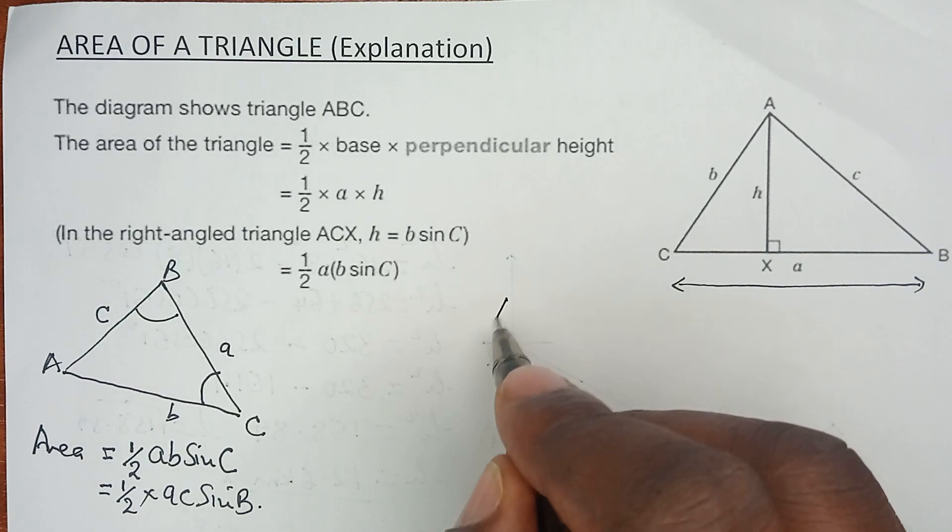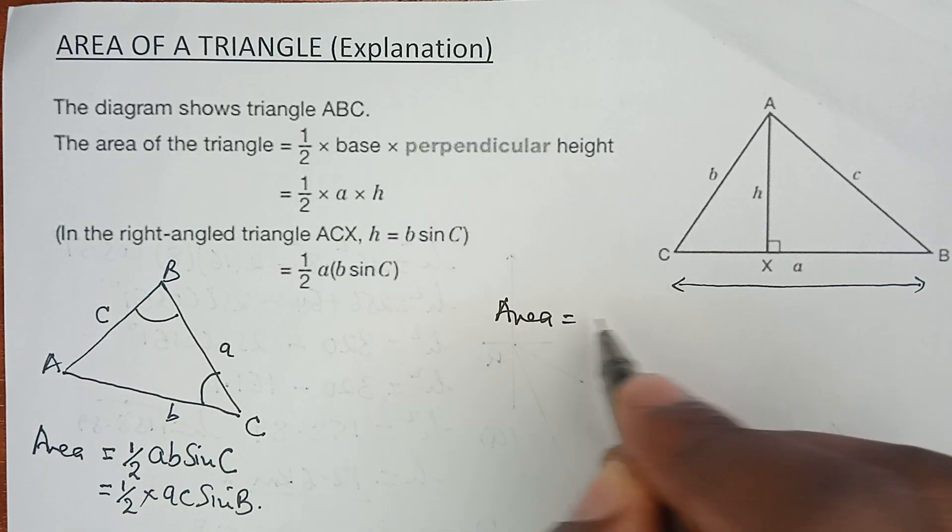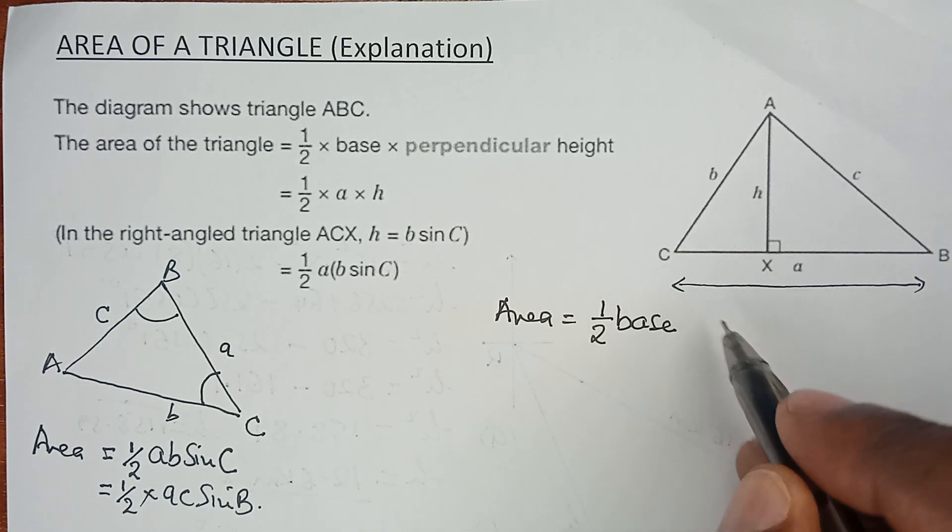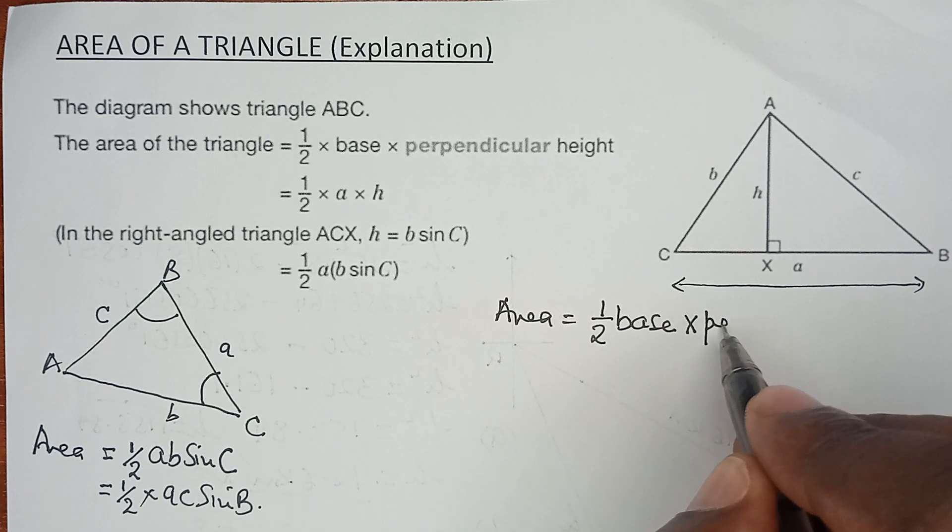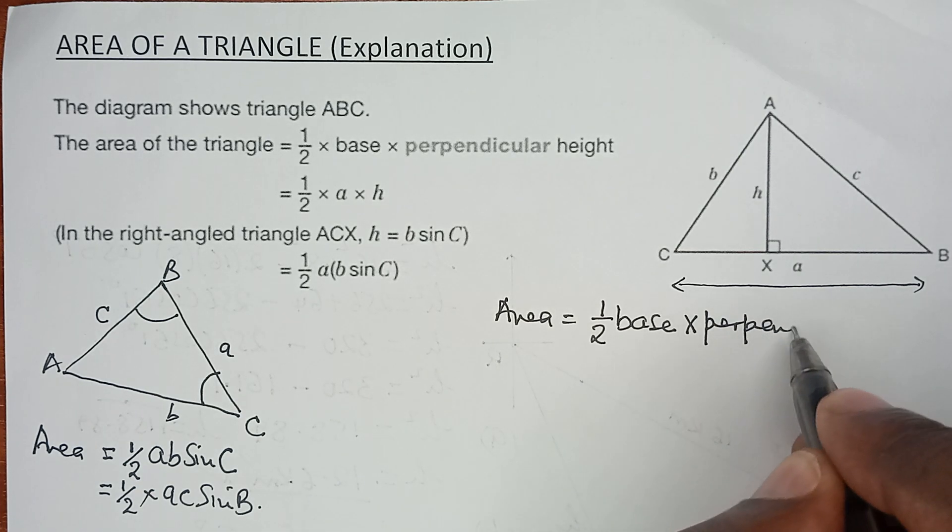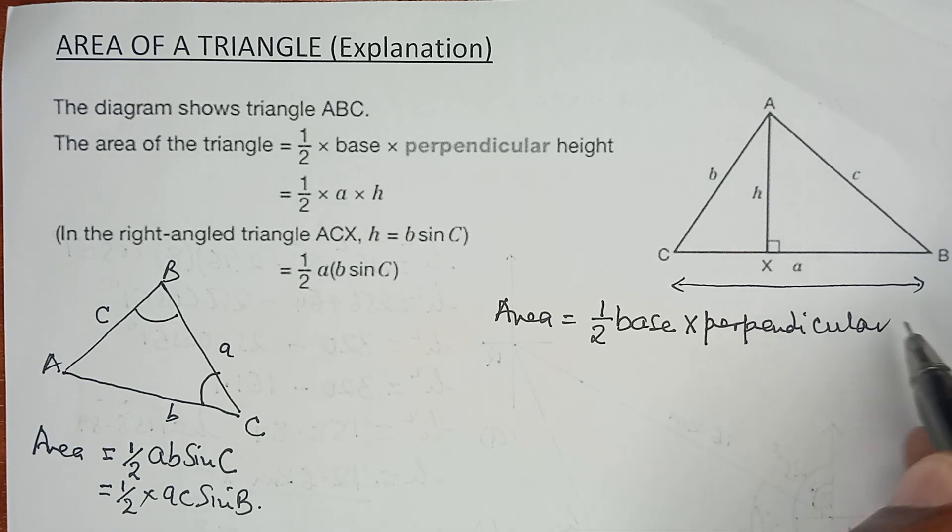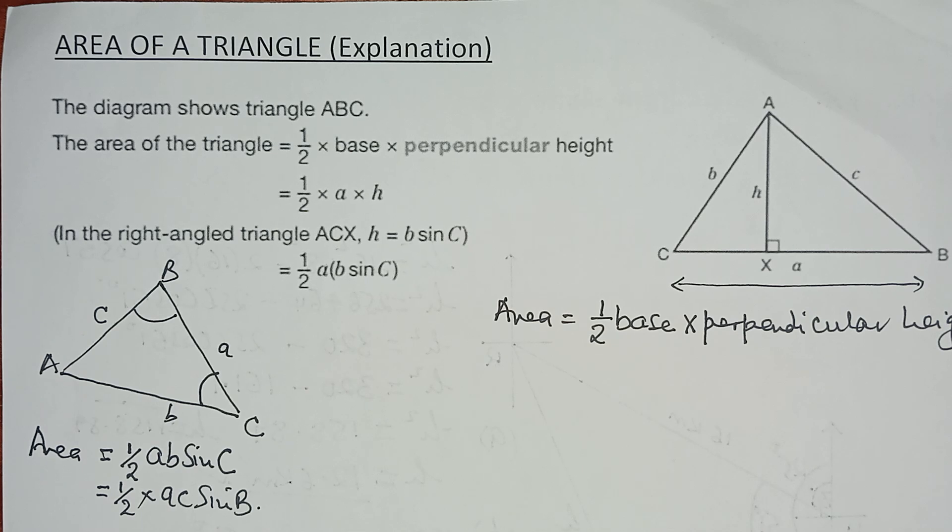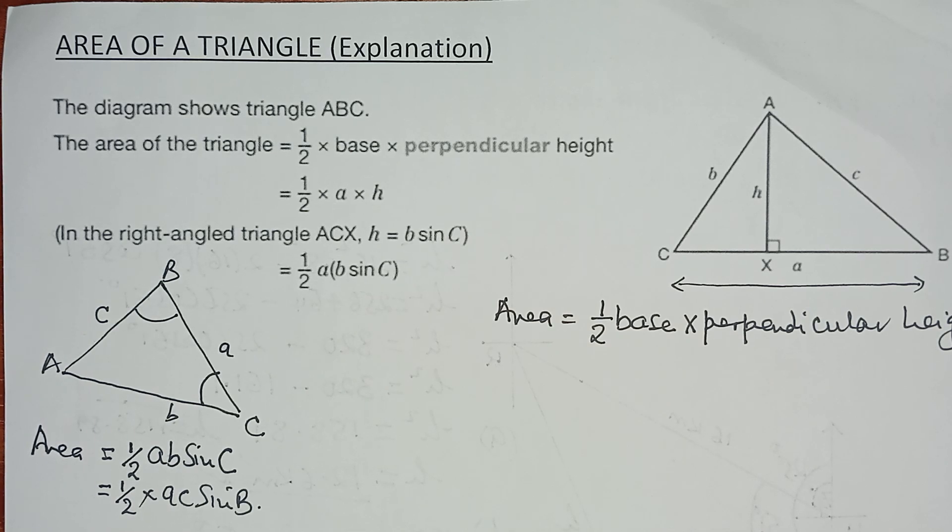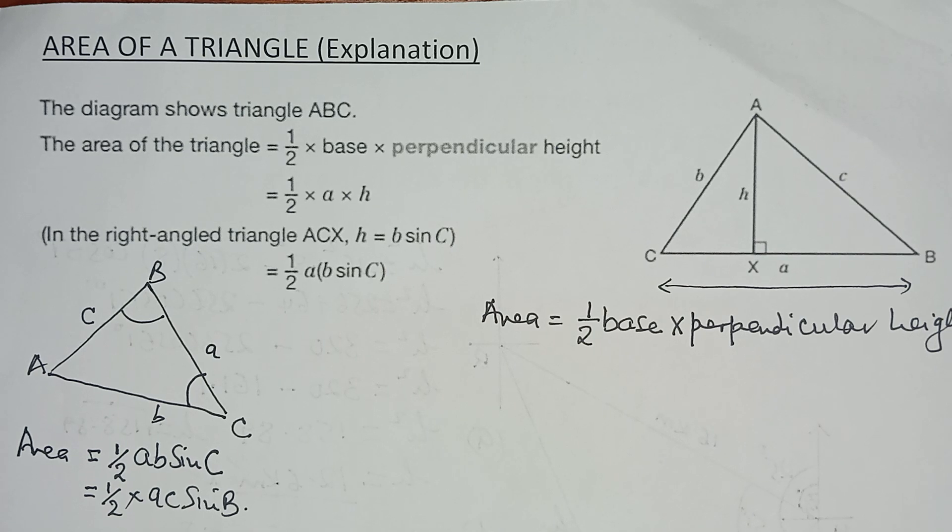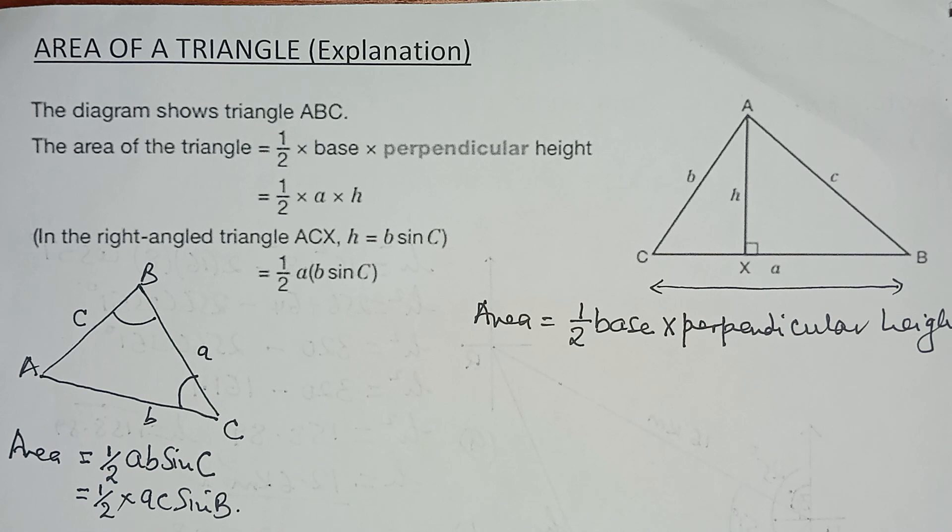Ordinarily, we know the area of a triangle is a half times base length times the perpendicular height. And in this case, the perpendicular height, as it were, or as you would expect, is actually the H itself.